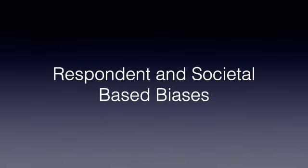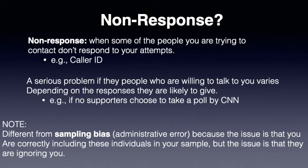Respondent and societal-based errors are introduced by the respondent or the timing of the survey in society, making it difficult to interpret what's being told to us and by whom. The first problem is non-response: when some people you're trying to contact don't respond to your attempts. Some people choose not to take the poll even when offered the opportunity. Today, many of us have caller ID, so when you get a call from a pollster, you're most likely not to answer. It's a serious problem if the people choosing not to respond vary based on the answers they'd likely give.